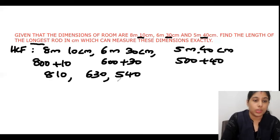First we will do the HCF of 810 and 630. 810 equals 630 times 1 plus 180 as the remainder.